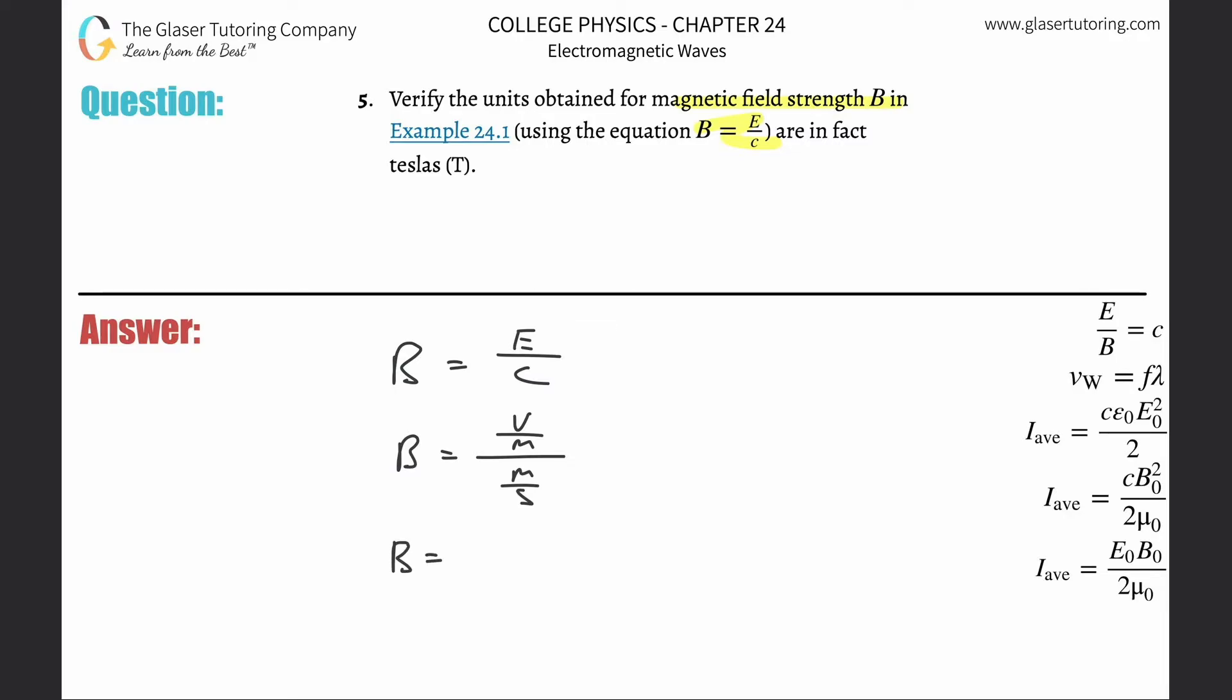All right, so basically what we need to do here is multiply this numerator by the reciprocal of the denominator. It'll look just like this, then we'll try to clean it up a little bit. So this will be times seconds per meter. So this is volt second per meter squared.